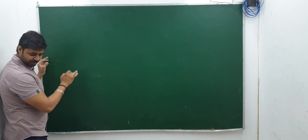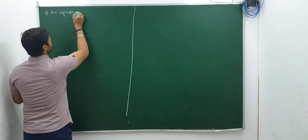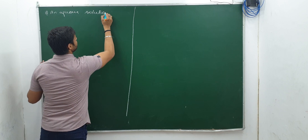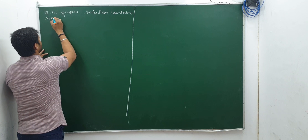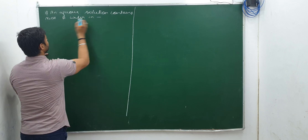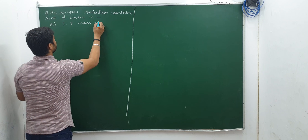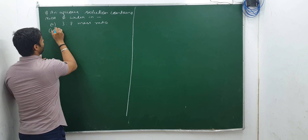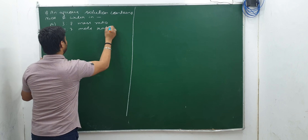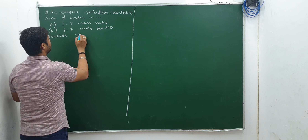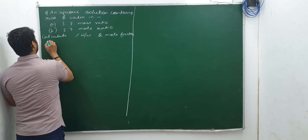Write the question: An aqueous solution contains NaOH and water. First part: in a mass ratio of 3:7. Second part: in a mole ratio of 3:7. What you have to do: calculate percentage w/w and mole fraction of NaOH for each part.